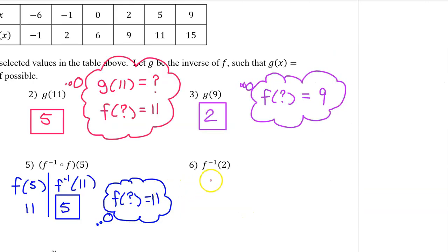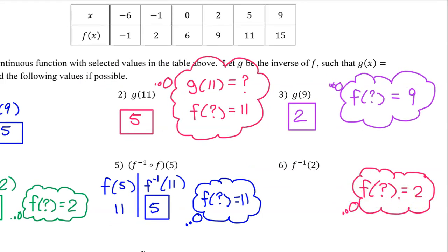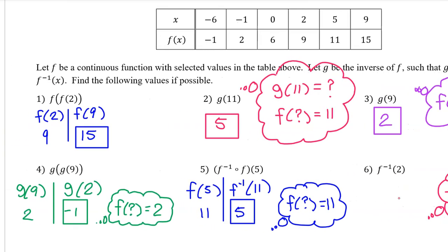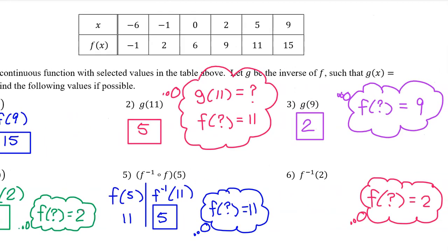Number 6: we need to evaluate f inverse at 2. You either ask yourself f at what is equal to 2, or you realize that f inverse at 2 and g at 2 are the same thing. Either way, the answer should be negative 1.